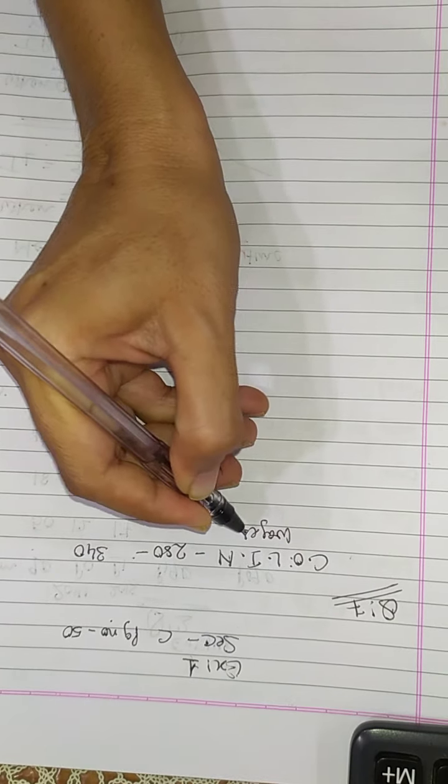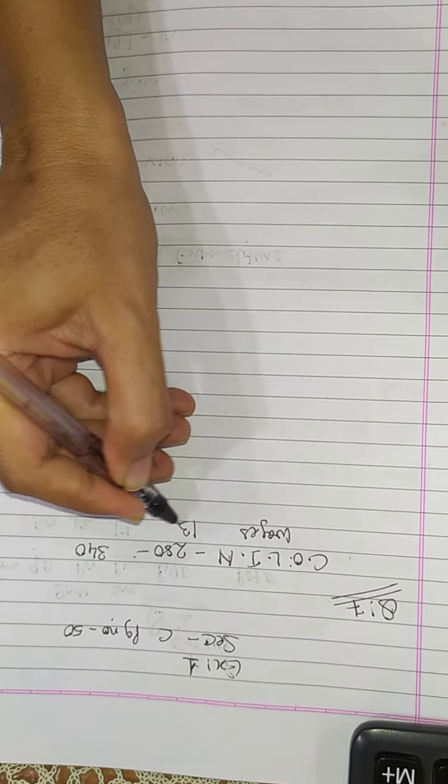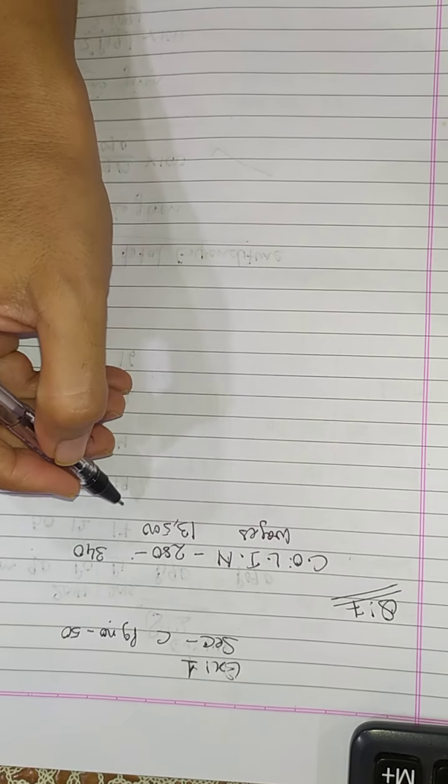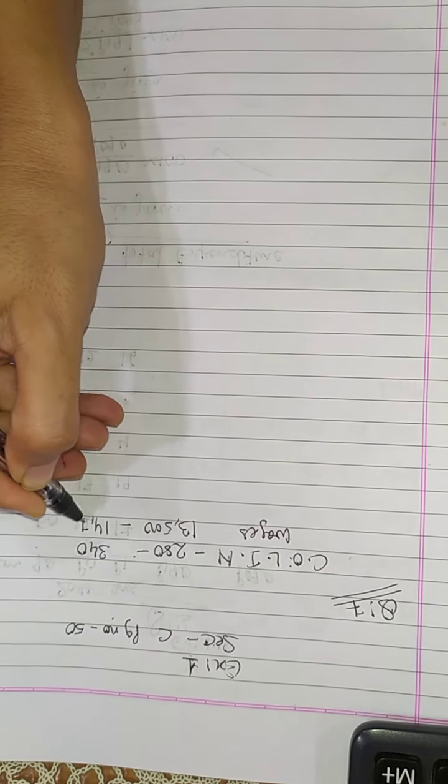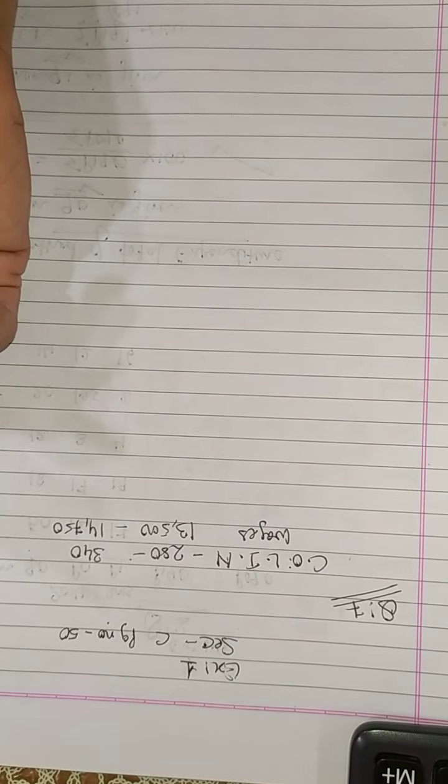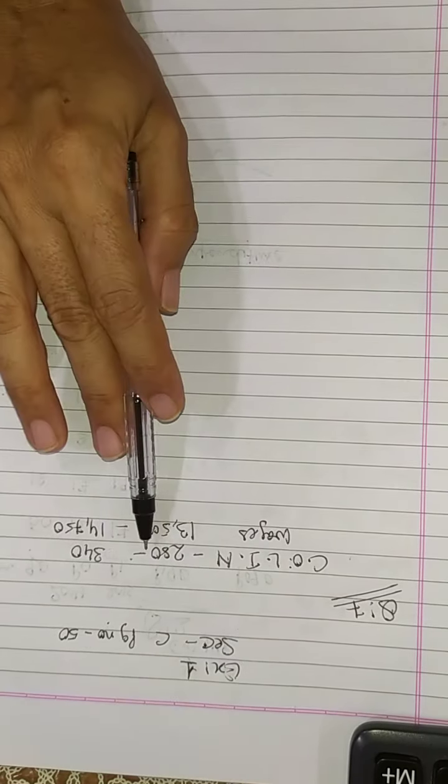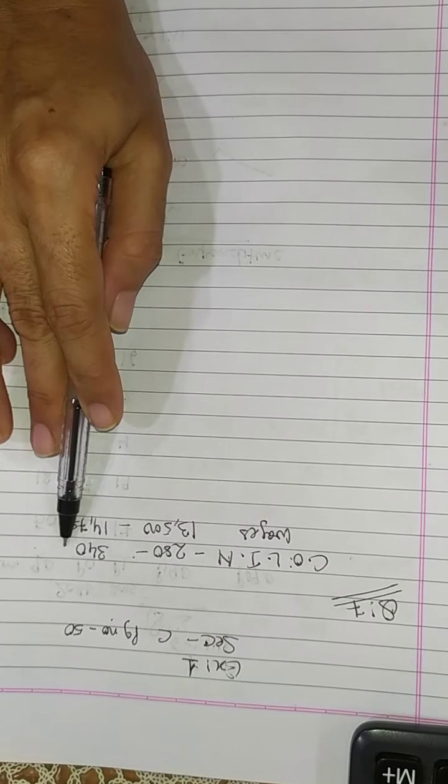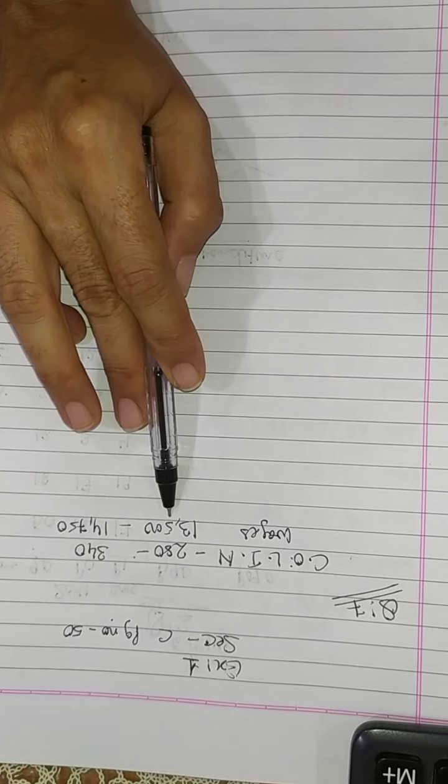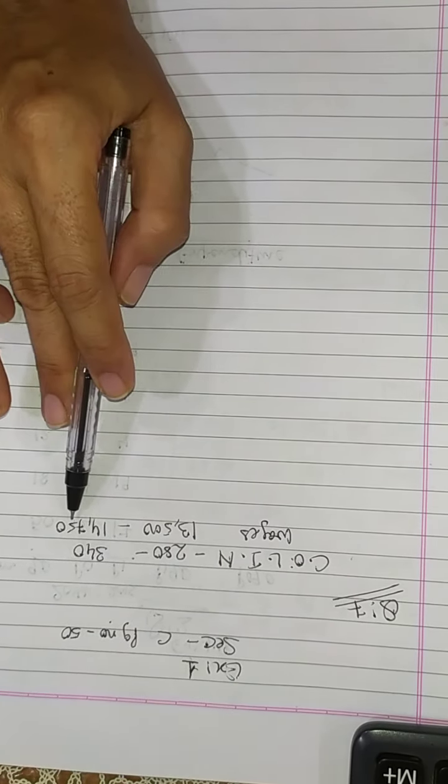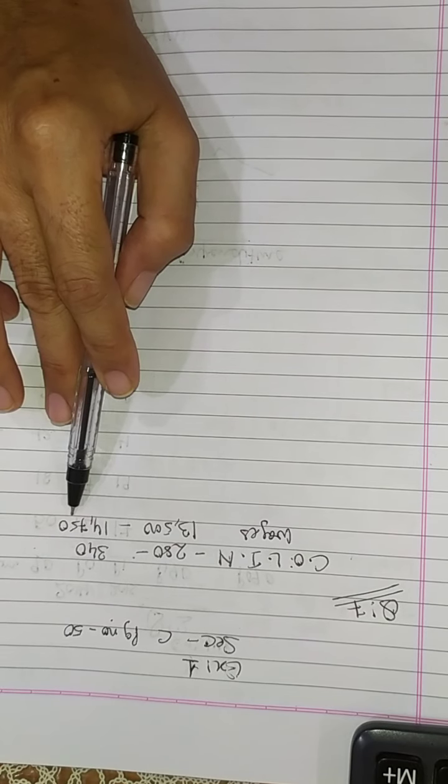And the wages, they are increased from rupees 13,500 to rupees 14,750. Now we have to check if there is gain or loss to the worker. The question is, pehle cost of living index number 280 tha aur 340 ho gaya aur worker ki wages pehle 13,500 tha ab ho gaya 14,750. So the wages increased, is it actually real gain or loss of the worker?